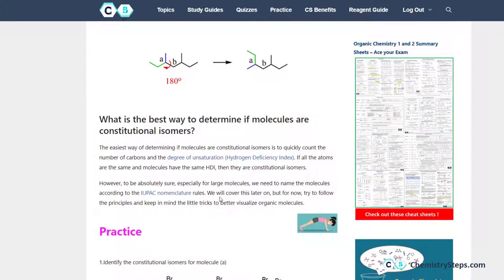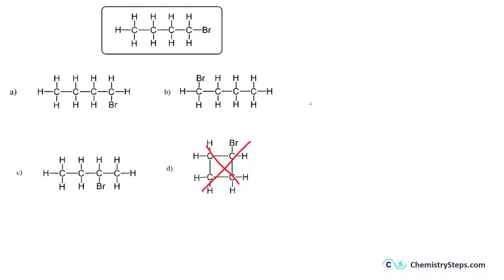If you haven't yet covered naming of compounds, you can simply number the carbon atoms without following any rules. For example, number the chain: one, two, three, four. When comparing to other structures, start with the carbon connected to the Br and number one, two, three, four. What you pay attention to is what each numbered carbon is connected to — here carbon number one is connected to the Br.